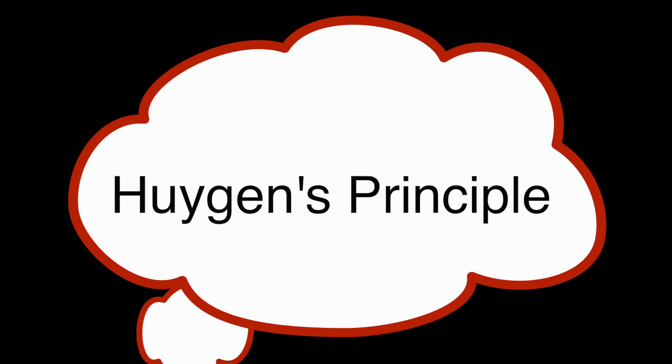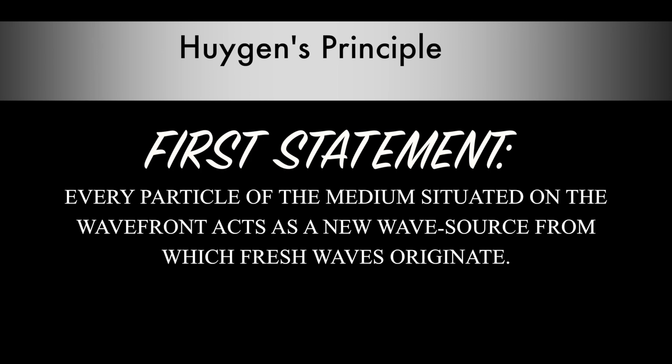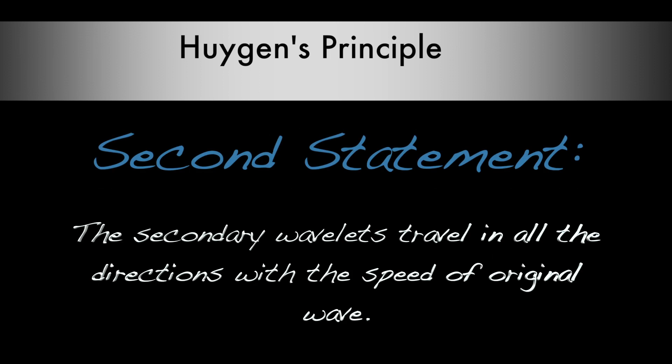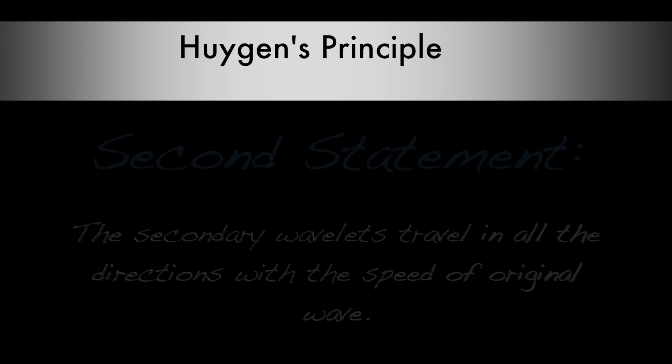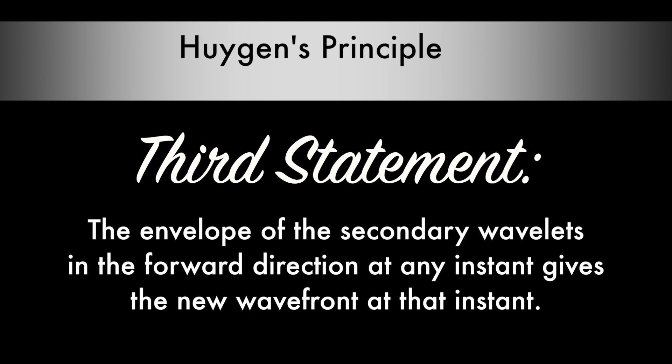Now, we will look at the process of reflection and refraction based on Huygens Principle. Just to recap: Huygens Principle says every particle of the medium situated on the wavefront acts as a new wave source from which fresh waves originate. The secondary wavelengths travel in all directions with the same speed as the original wave. And the envelope of the secondary wavelengths in the forward direction at any instant gives the new wavefront at that instant.